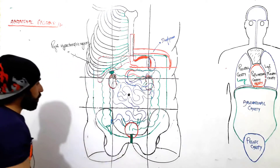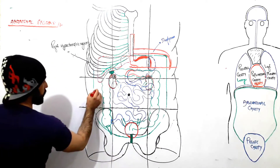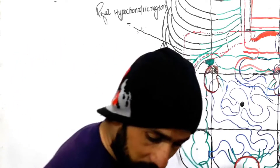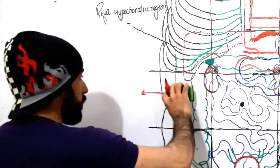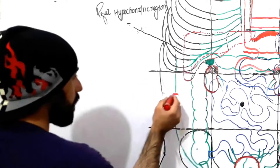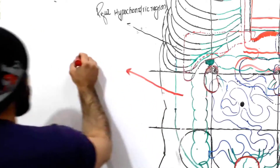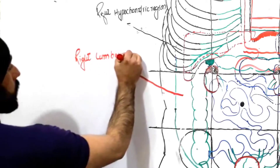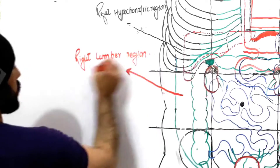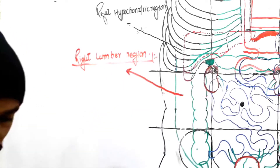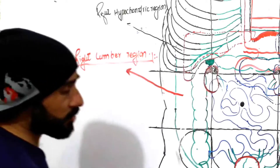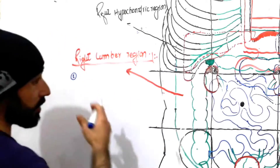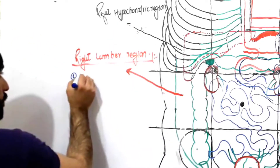Let us focus on the organs which are present in the right lumbar region. We should know which organs are present in the right lumbar region of our abdomen. As we discussed in previous lectures, we have grouped the organs — so the first group of organs are the digestive organs.